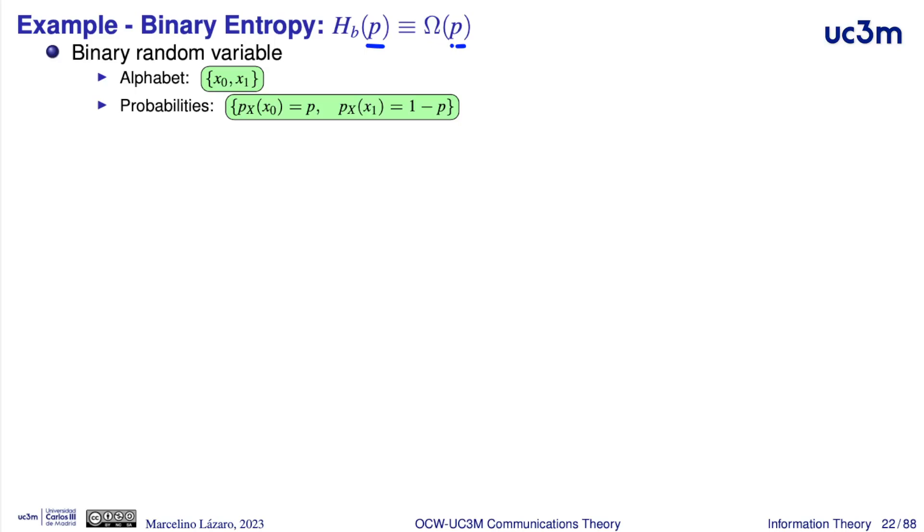And this function represents the entropy of a binary random variable. For example, the alphabet has only two elements, one of them has probability p, the argument of the function, and the other has the complementary probability, 1 minus p.